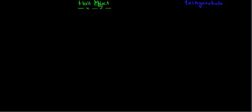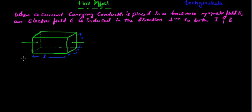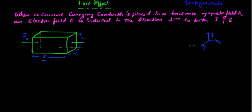Let us consider a piece of material with dimensions: length L, width W, and thickness T. Assume a current is flowing in the x direction. Let us define reference directions — x, y, and z coming out of the video towards you — three mutually orthogonal directions. Now let us consider magnetic field B in the z direction.